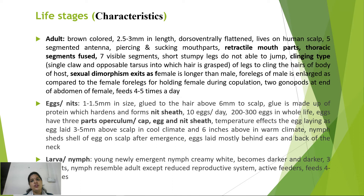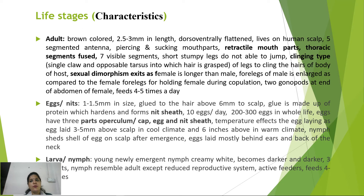Lice have piercing and sucking retractile mouthparts; thoracic segments are fused, with seven visible abdominal segments. They have short, stumpy, clinging legs with a single claw and opposable tarsus to hold hair. Sexual dimorphism: females are longer than males; males have an enlarged foreleg to hold females during copulation. Eggs are called nits — small, glued to hair about 6 mm from the scalp using protein that hardens to form the nit sheath. Females lay up to 10 eggs per day.